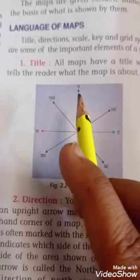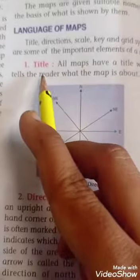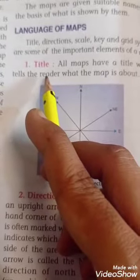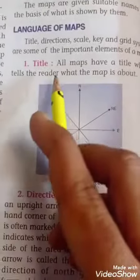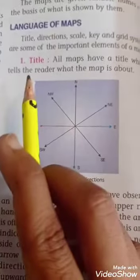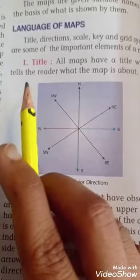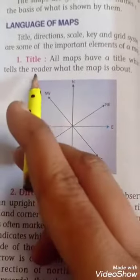And now we will discuss one by one. Title means we can say the main heading. Heading is known as title. So all maps have a title which tells the reader what the map is about.